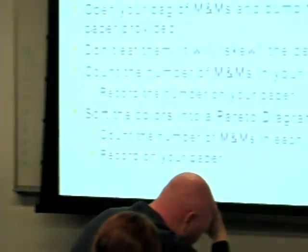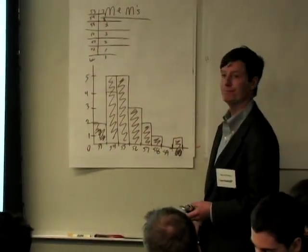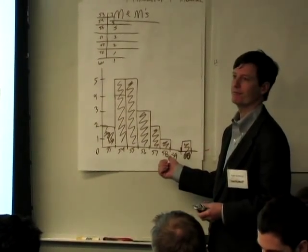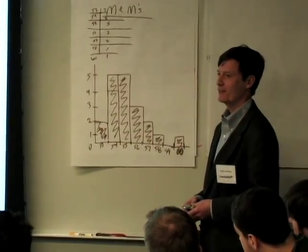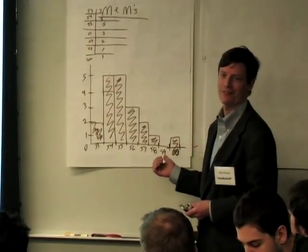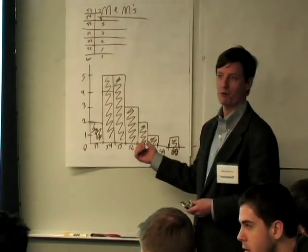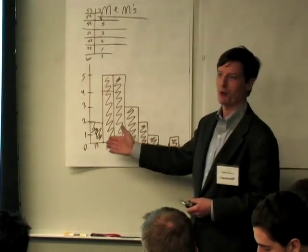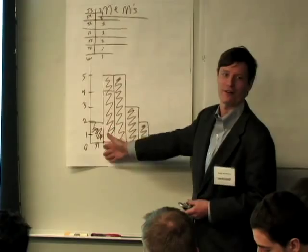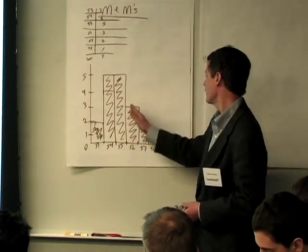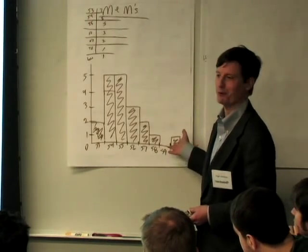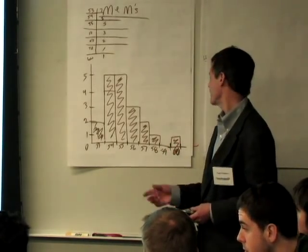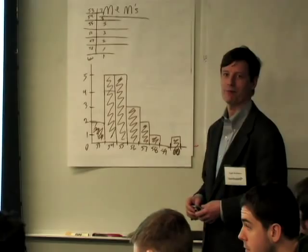Looking at this data — is this histogram symmetrical? No. The steep edge is at the low end. They'll get in trouble if they underweight, so there's a strict lower spec. Whereas the upper end — that's just extra M&Ms. They don't want to give you too many, but if you get 60 every now and then, that's fine with them.